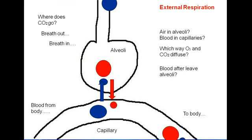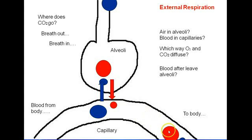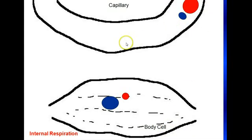The oxygen that you breathed in goes into the alveoli, diffuses into the bloodstream, heads to the body through the left side of the heart, heads down to the cells, gets into the cells, and then the cells can use that oxygen to make the energy they need to carry out their functions.